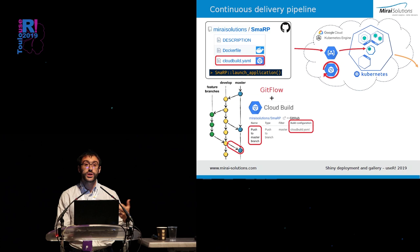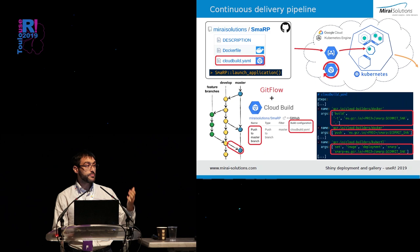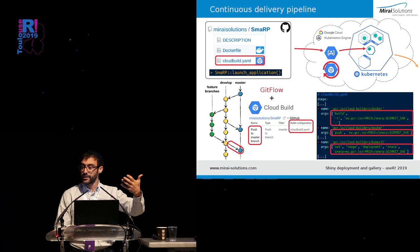For the case of SMARP, we are using a simple GitFlow approach where we push to the master branch only when we want to release a new version of the app. Then with Google Cloud Build, we can set a trigger that reacts on such a push event and executes steps defined in a Cloud Build YAML file. You can recognize the very same build and push commands associated with the commit hash of the push event. There is also a command called set image that updates the existing deployment called SMARP to use the new image we have just made available.